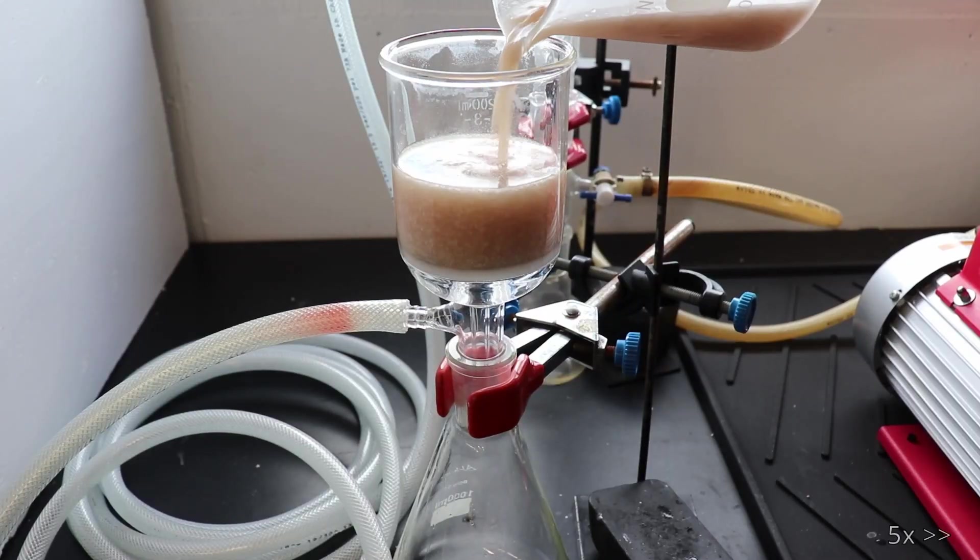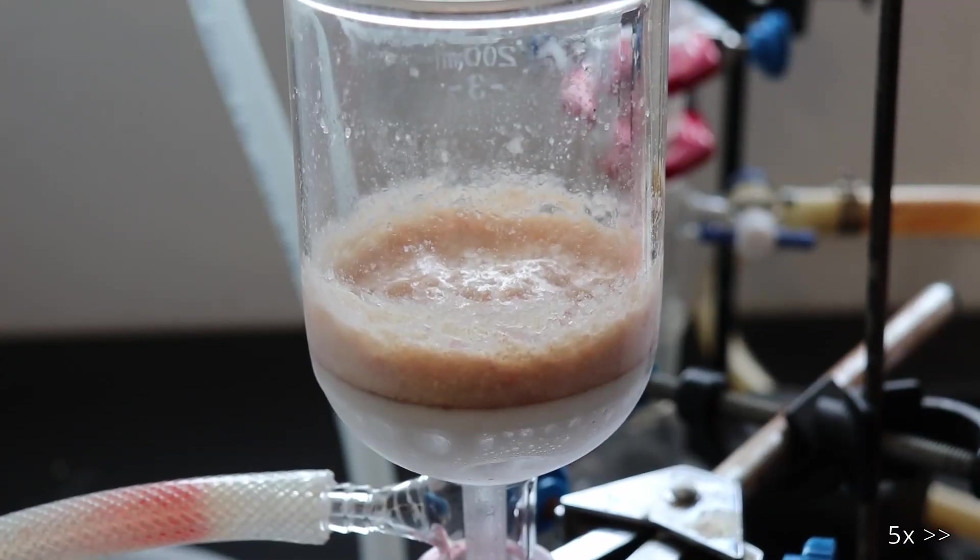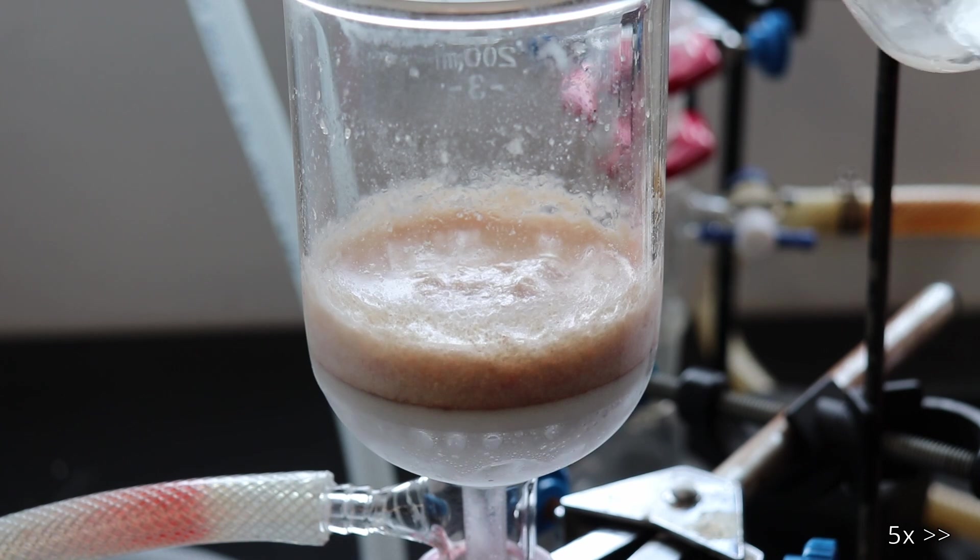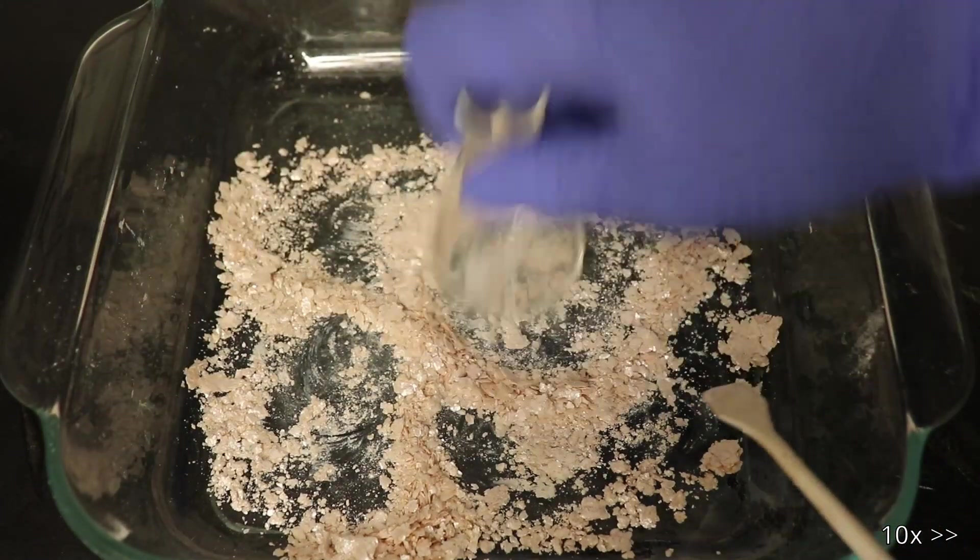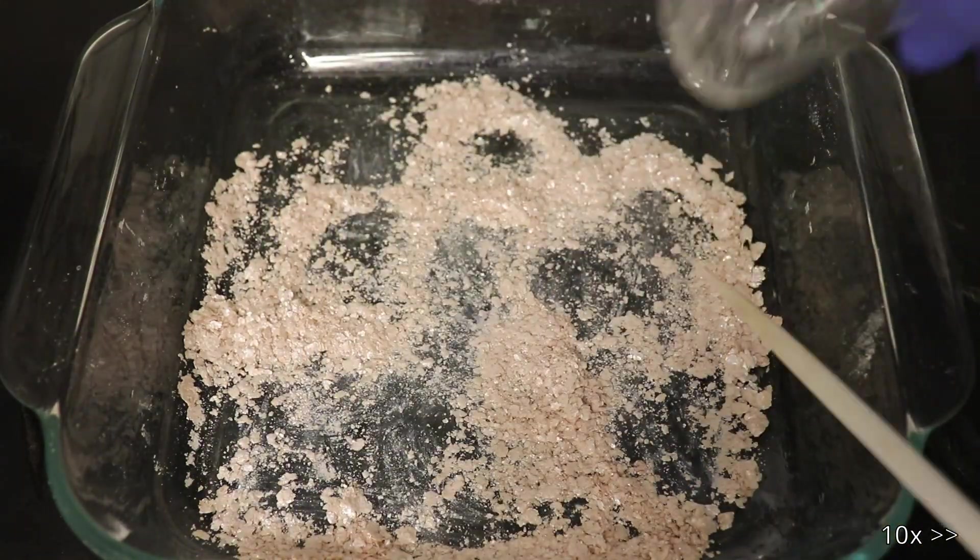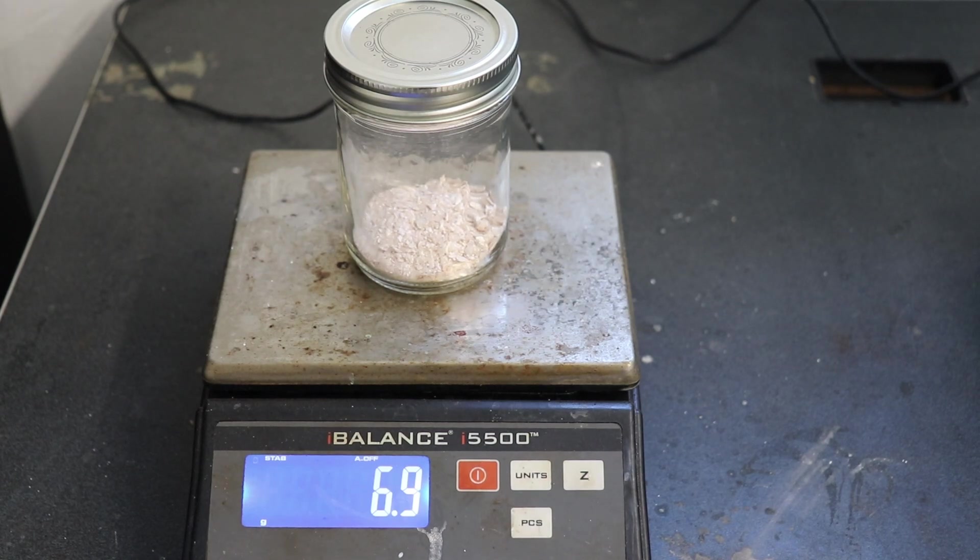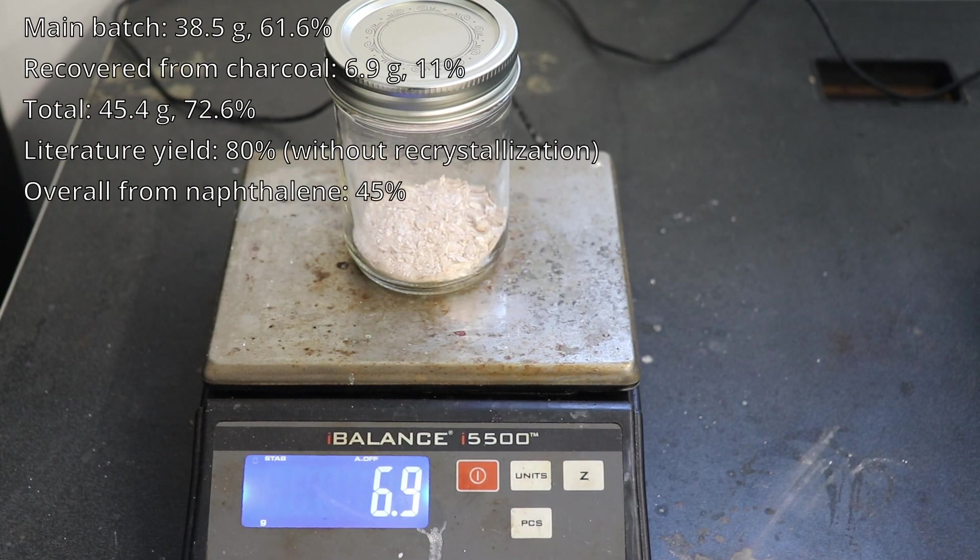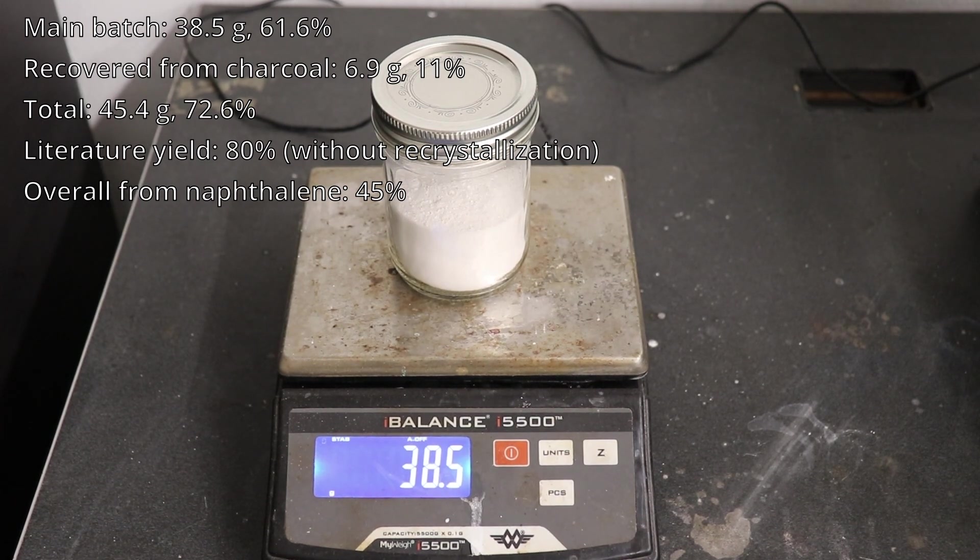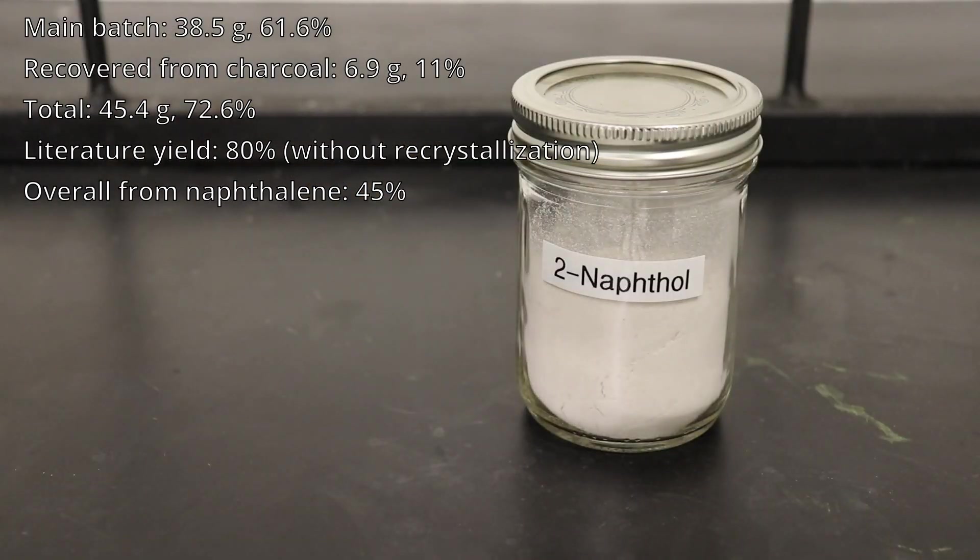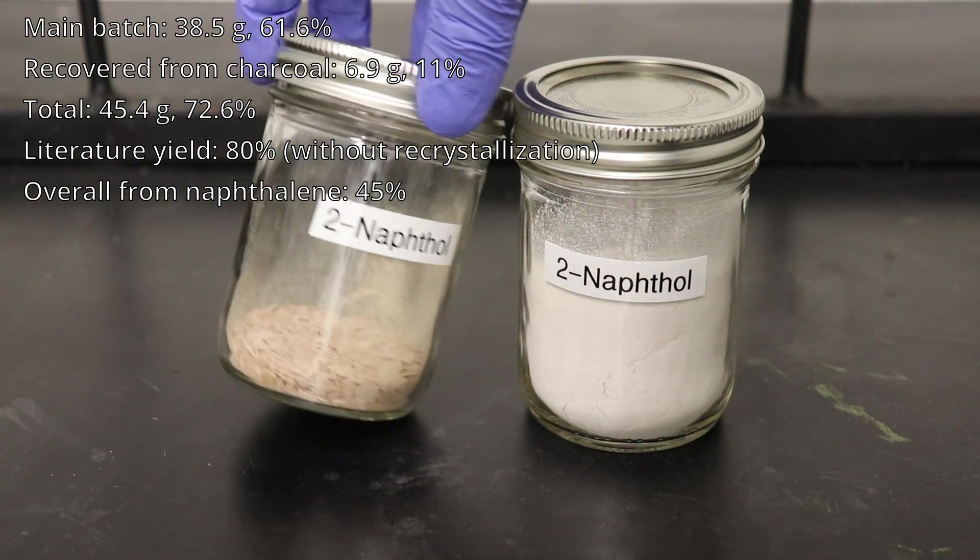Then the 2-naphthol was filtered off and dried. 6.9 grams of 2-naphthol was recovered from the activated charcoal, and together with the 38.5 grams from the main batch makes a total yield of 45.4 grams, which is 72.6%. And compared to the 80% from Vogel, this synthesis was quite successful.